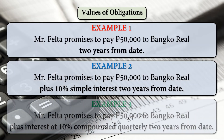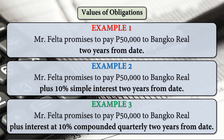Our first example: Mr. Felta promises to pay 50,000 pesos to Banco Real two years from date with no interest. Since there is no interest, the present value is equal to the future value.